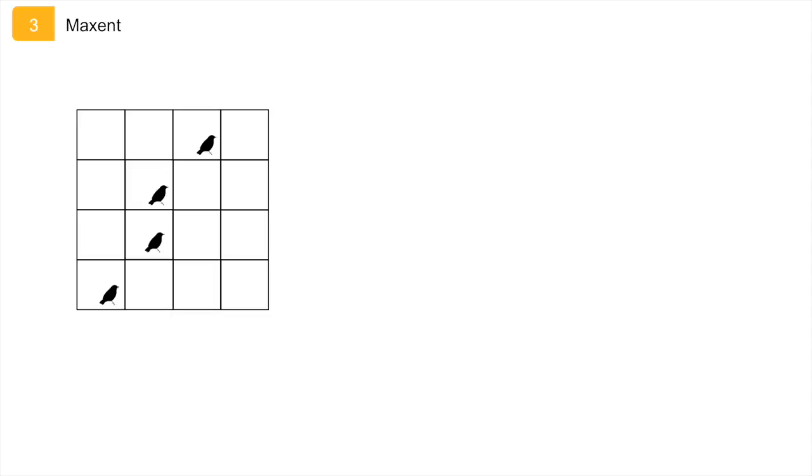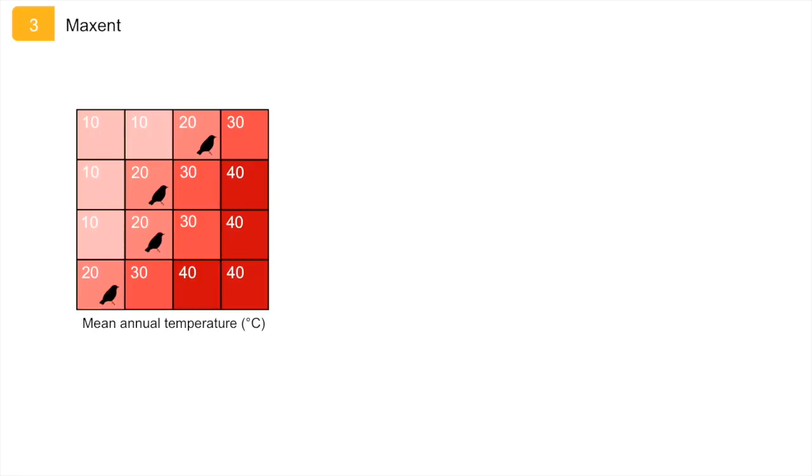I will illustrate this with a simple example. This grid represents a landscape in which some cells we have observed are bird species to be present, and for the other cells we don't know whether the species is present or absent. One of the environmental variables that we put into the model is the mean annual temperature, and we have a value of this environmental variable for each cell. Maxent calculates the mean of all cells in which the species has been recorded, which in this case is 20 degrees Celsius.